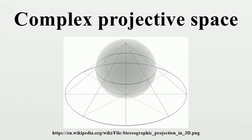Indeed, in a certain sense the sphere can be regarded as a family of circles parametrized by CPN. This is the Hopf fibration. Complex projective space carries a metric called the Fubini-Study metric, in terms of which it is a Hermitian symmetric space of rank 1.